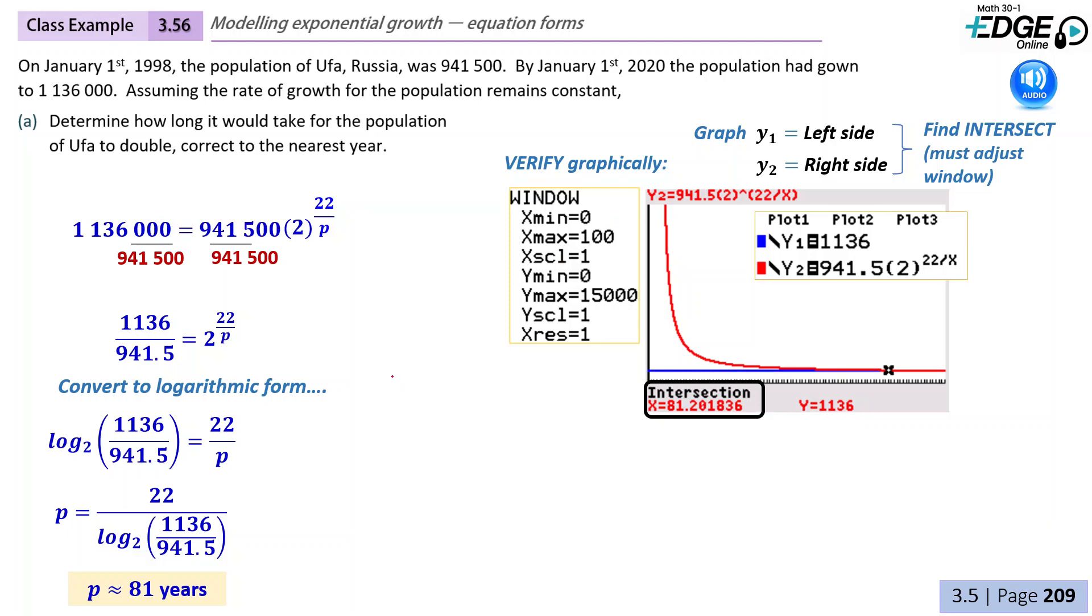Just get rid of some of those zeros. So we could have rewrote that as 1136 is equal to 941.5 times 2 to the power of 22 over P. Like I said, that just makes it a little bit nicer to deal with. So now you would graph the left side of the equation as y1 and the right side of the equation as y2 and then find the intersection.